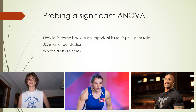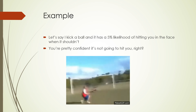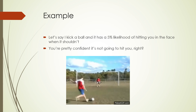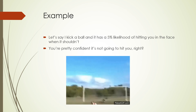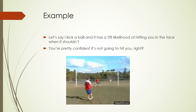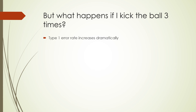An important issue presents itself: type one error rate. In all of our studies, the type one error rate is 0.05 — that's the alpha level we choose, a field-agreed standard that we are 5% comfortable falsely rejecting the null hypothesis when it's actually true. But the issue is I'm not making just one comparison — I'm making three comparisons when I probe that effect. It's like kicking a ball with a 5% chance of hitting you in the face. If I kick it three times, you're less confident you won't get hit. The more comparisons we make, the more dramatically the type one error rate increases beyond 0.05.